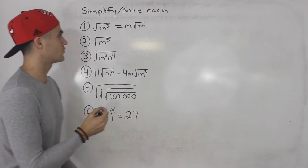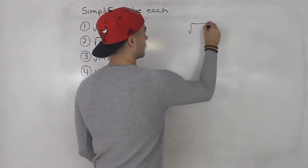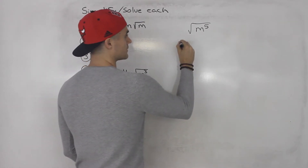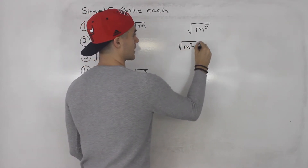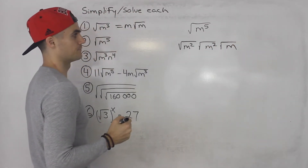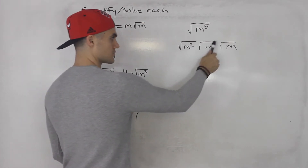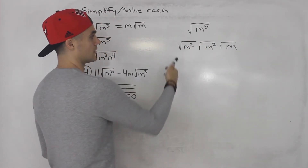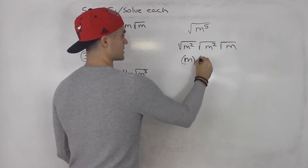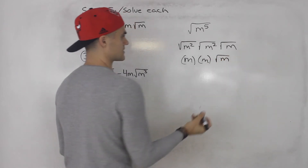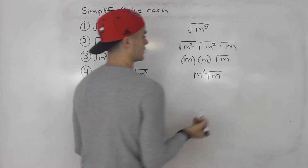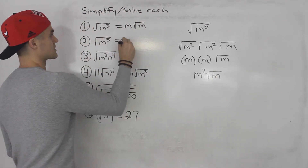Moving on to number 2: the square root of m to the 5th. You can break that down into root m squared times root m squared times root m, because 2 plus 2 plus 1 gives us 5. The square root of m squared and the square root of m squared each give m, and then root m can't be simplified further. So m times m is m squared, giving us m squared root m.